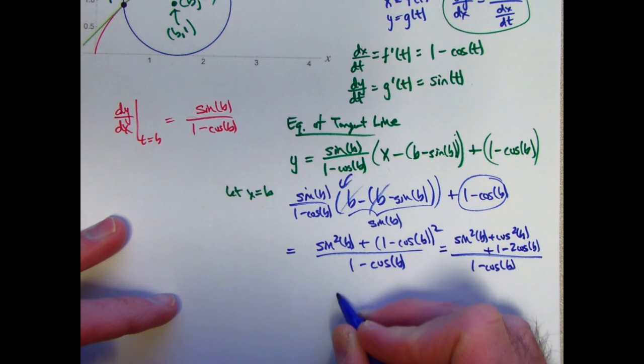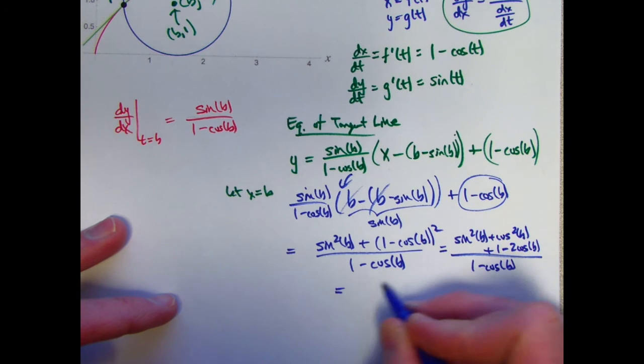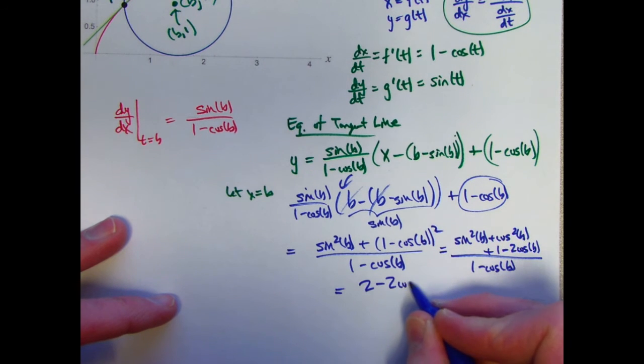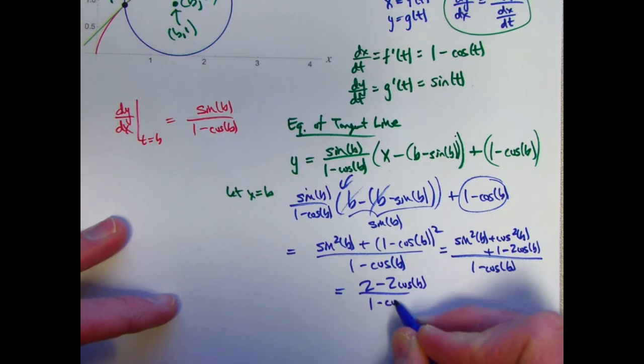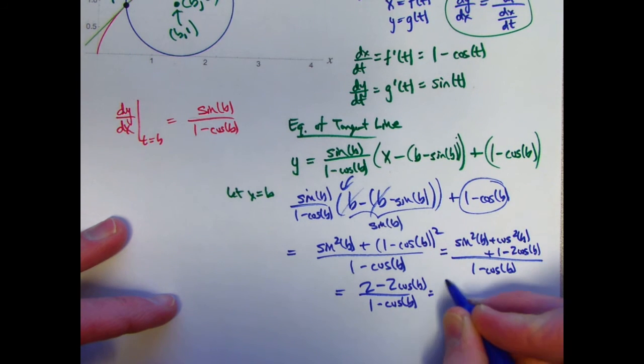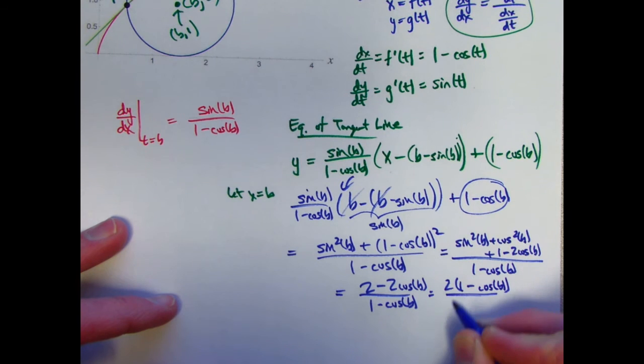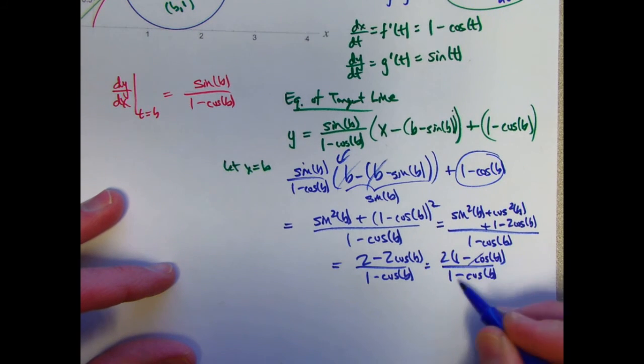Sine squared b plus cos squared b is 1. 1 plus 1 is 2. 2 minus 2 cos b over 1 minus cos b. Factor out the 2 and then cancel the 1 minus cos b. And this does indeed simplify to 2.